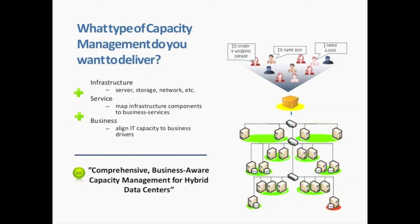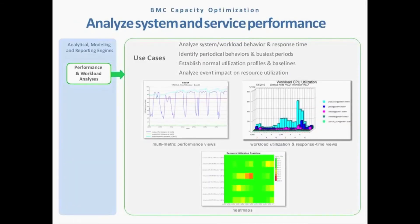Looking at it from a business perspective answers a lot of key questions. Drilling down into capacity management capabilities — analysis of your system and service performance is the starting point. Before you can get to a more optimized, efficient data center, you've got to know where you are: what you have, what's underutilized, what's overutilized. Get that baseline. That's what the analysis provides.